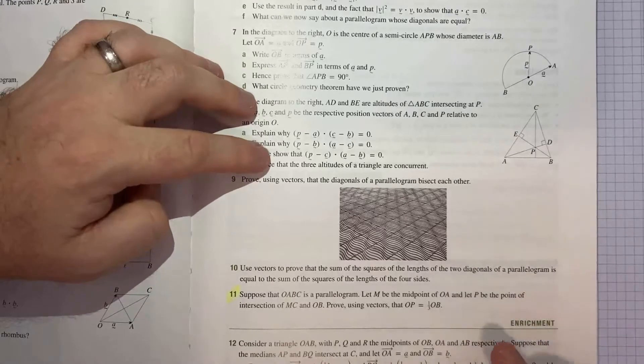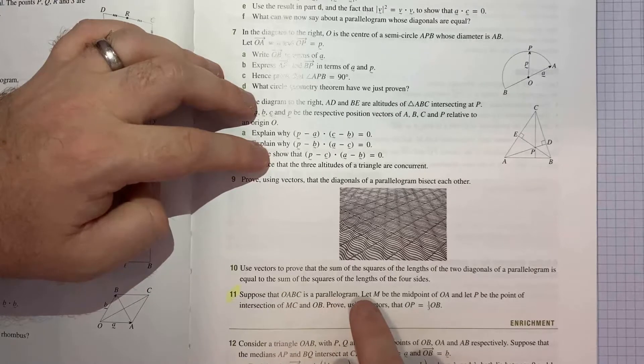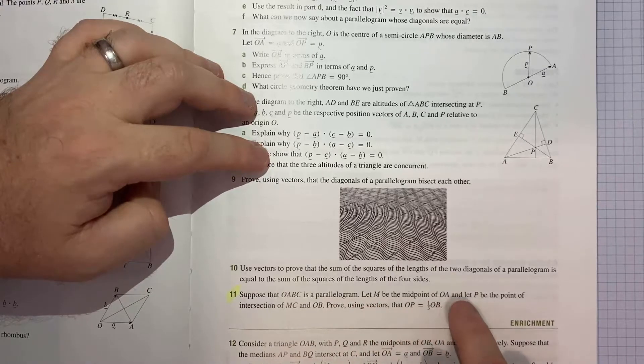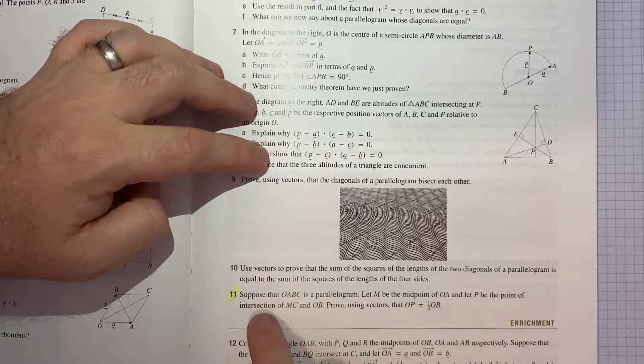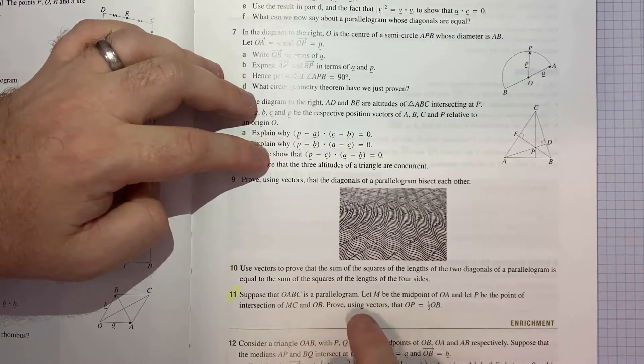In terms of what is the question, it says suppose that O, A, B, C is a parallelogram. Let M be the midpoint of OA and let P be the point of intersection of MC and OB. Prove using vectors that OP is a third OB.